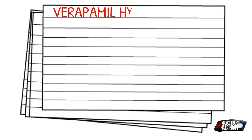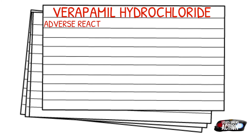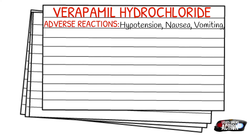Adverse reactions of verapamil can include hypotension, nausea, vomiting, weakness, bradycardia, drowsiness, pulmonary edema, and conduction abnormalities.